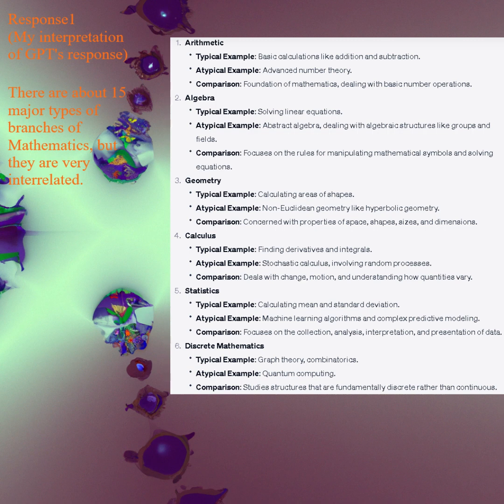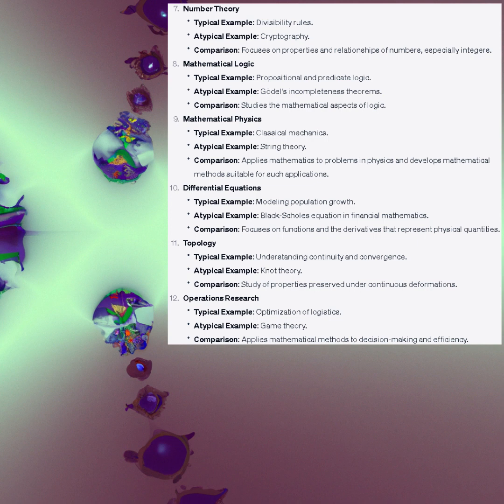Discrete mathematics. Typical example: graph theory, combinatorics. Advanced example: quantum computing. Comparison: study of structures that are fundamentally discrete rather than continuous. Number theory. Typical example: divisibility rules. Advanced example: cryptography. Comparison: focuses on properties and relationships of numbers, especially integers.